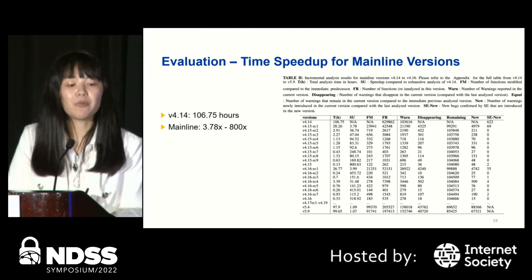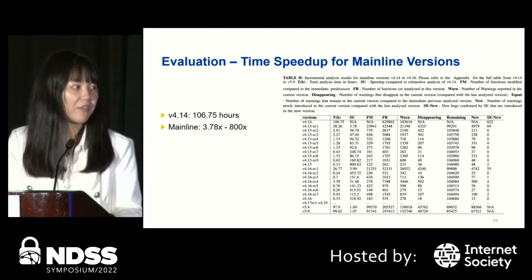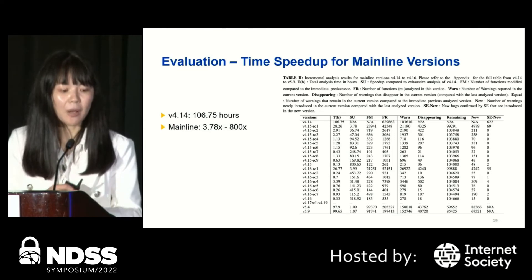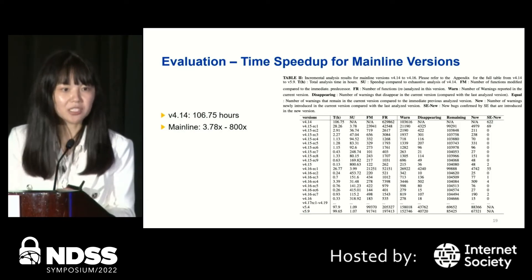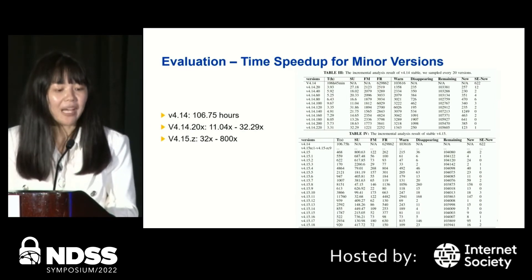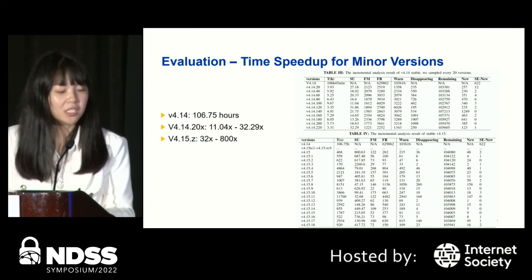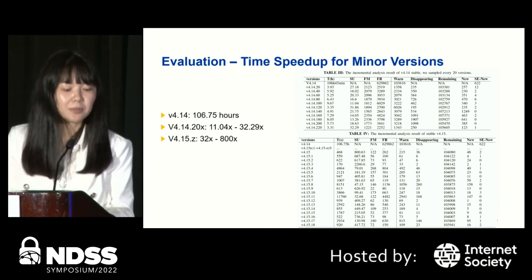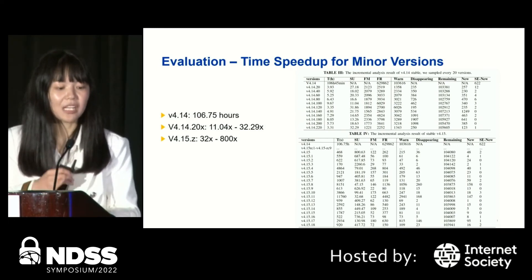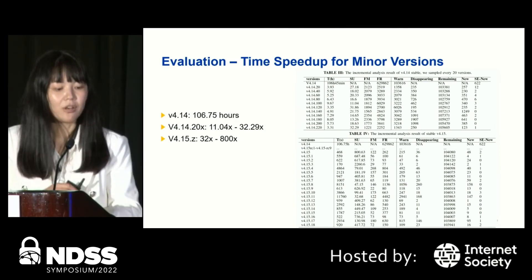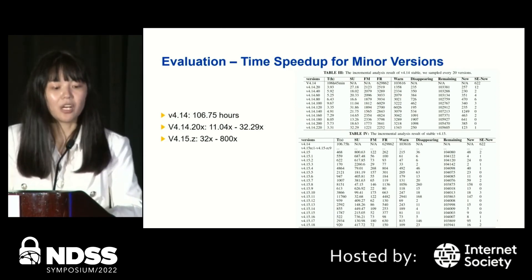For time speedup on mainline variants, we use variant 4.14 as the baseline, which took 106.75 hours to finish. The overall time speedup for mainline is 3.78 times to 800 times. For minor variants of 4.14, every 20 minor variants, the overall speedup is 11.04 times to 32.29 times. For variant 4.15, the speedup is 32 times to 800 times. Details are listed in the paper.